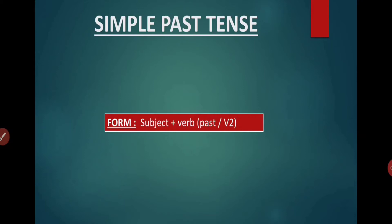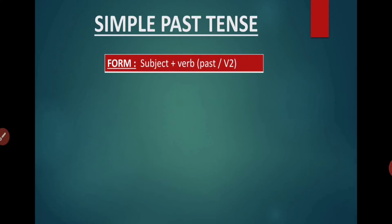So children, let's start simple past tense. Now let's see what's there. The form which will be there is subject plus verb. And which form of verb? Past form or V2.